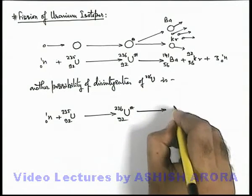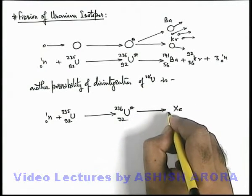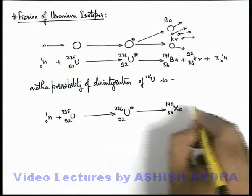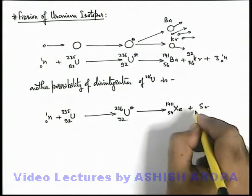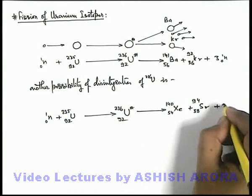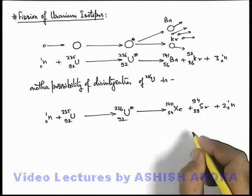And further splits into xenon with charge 54 and mass 140, plus strontium with charge 38 and mass 94, with two neutrons emitted in the reactions.